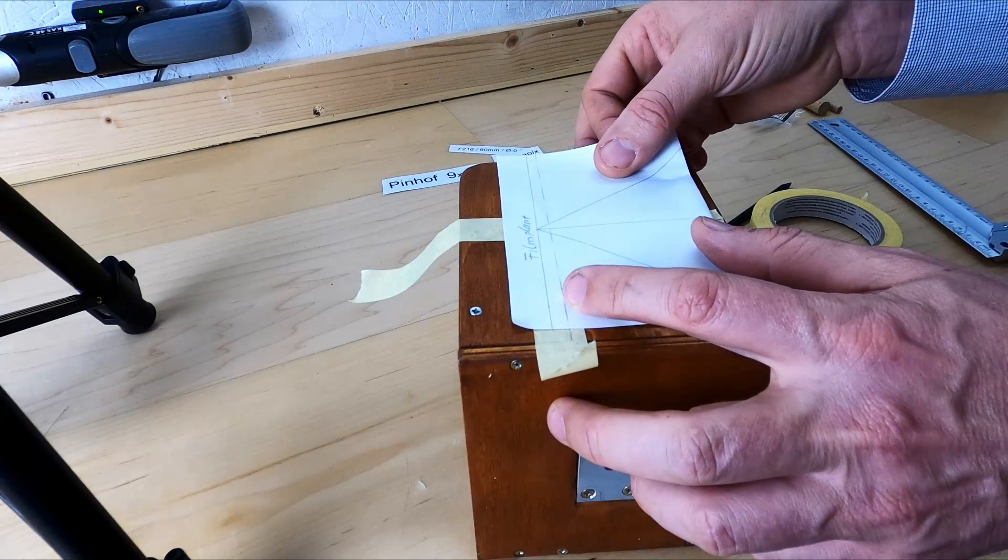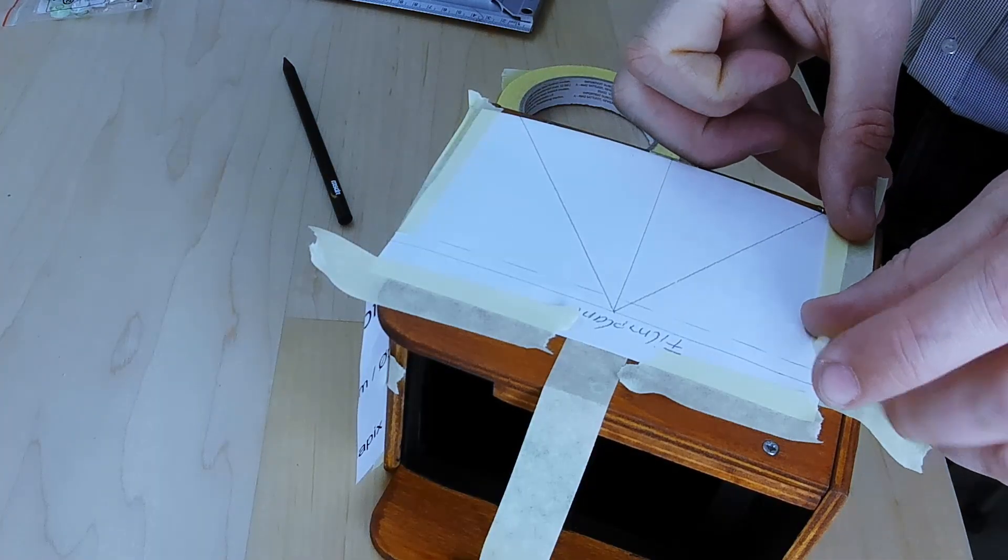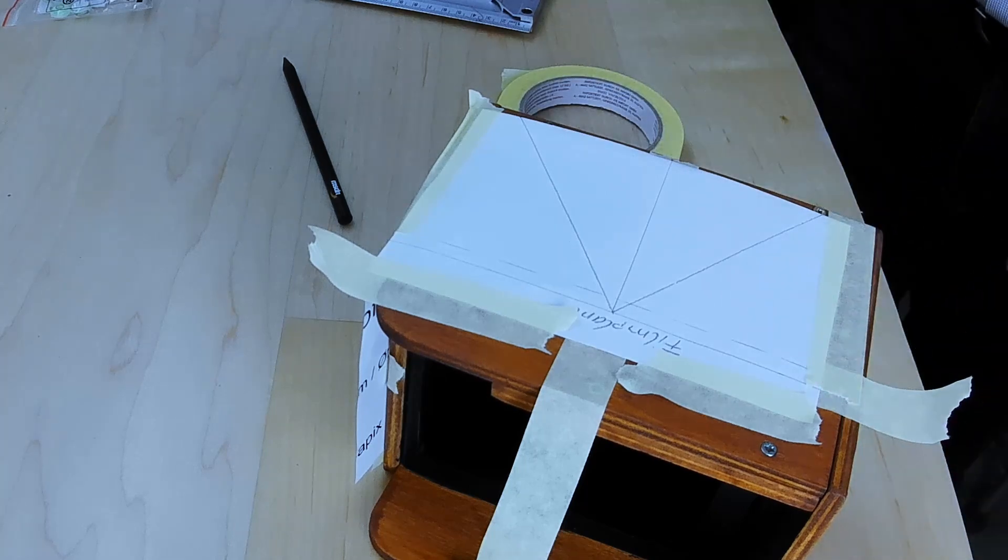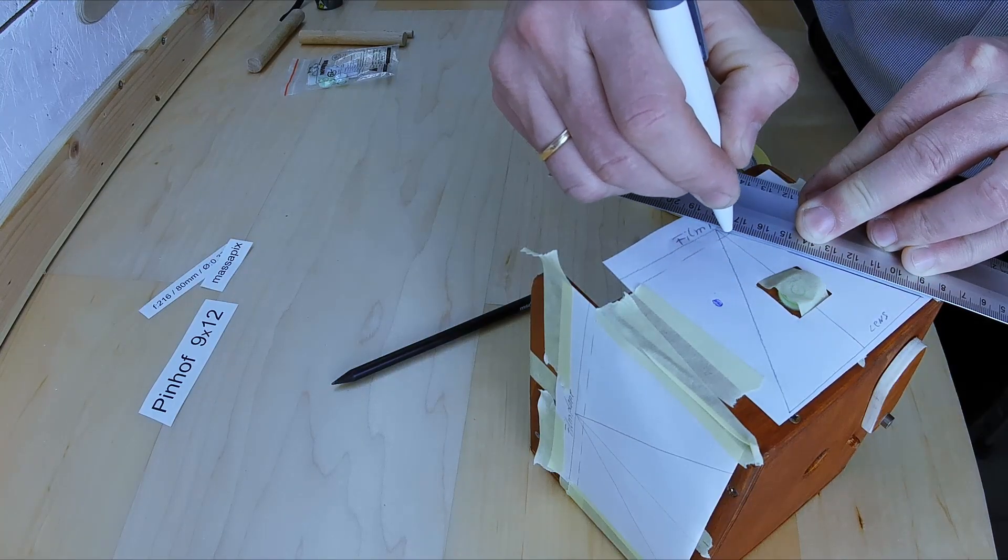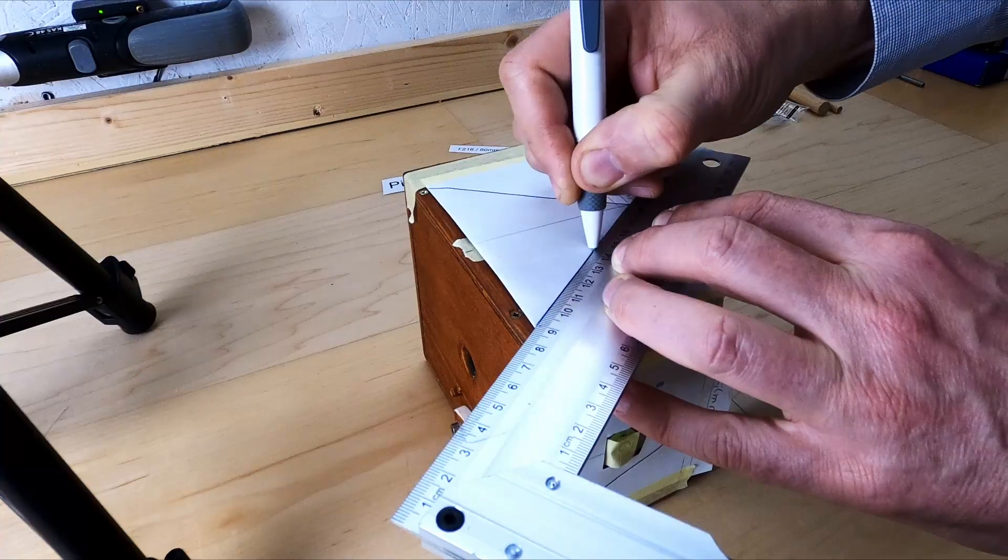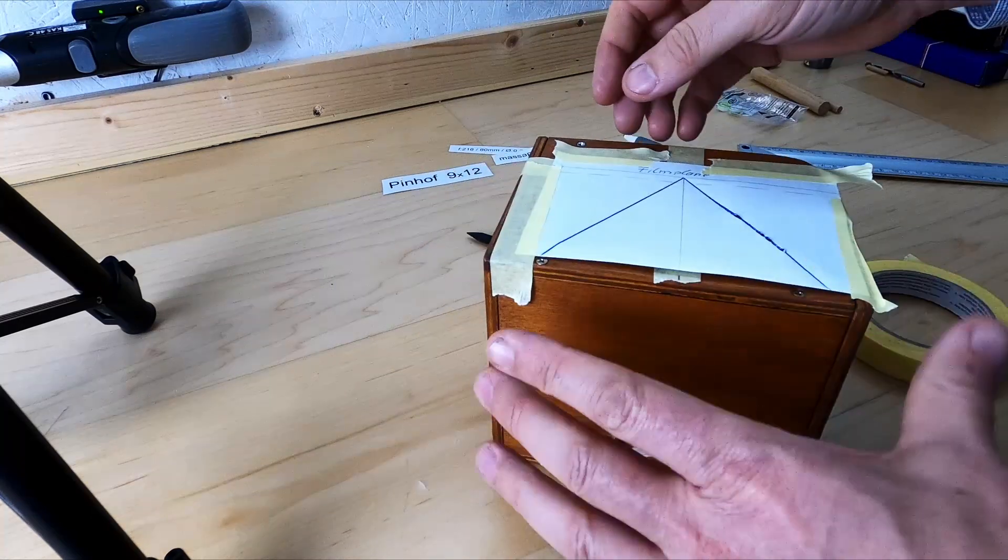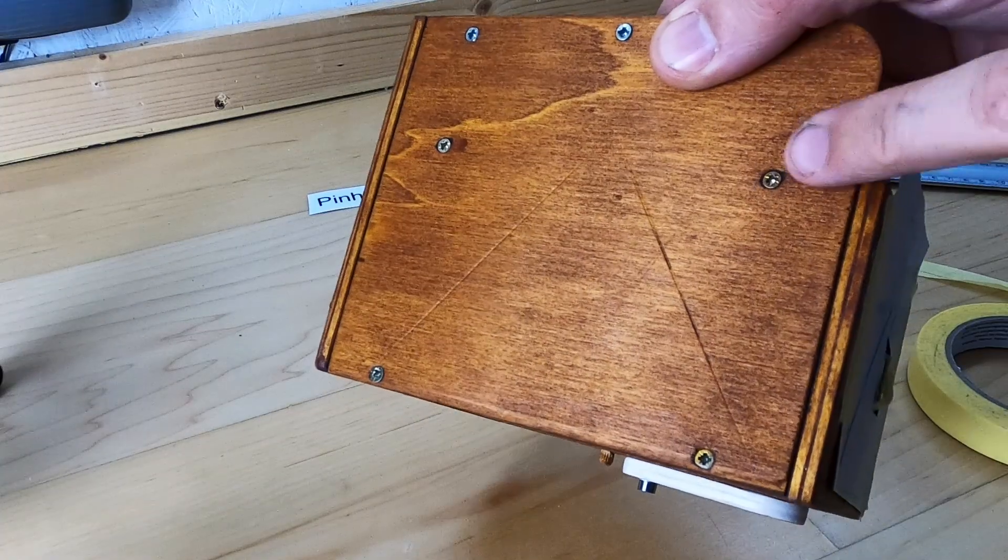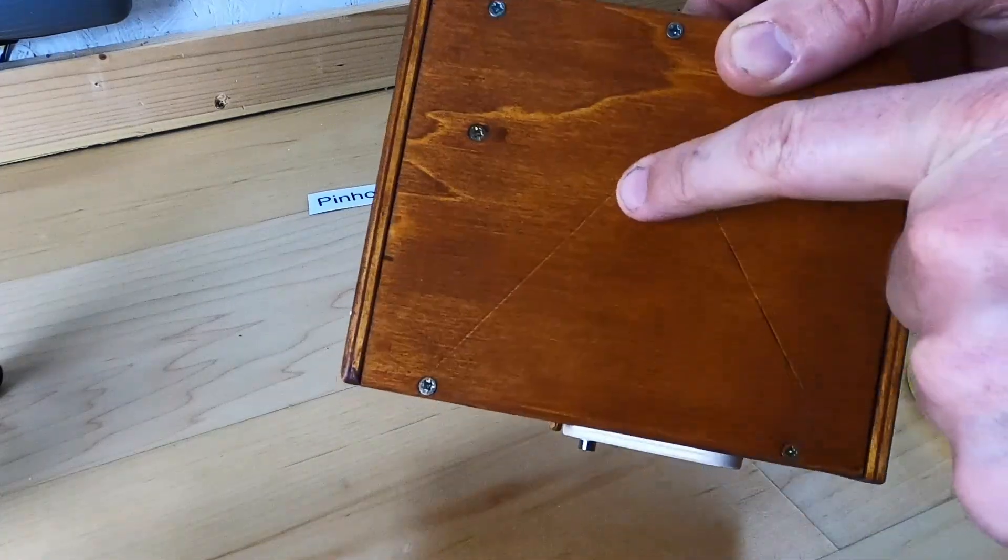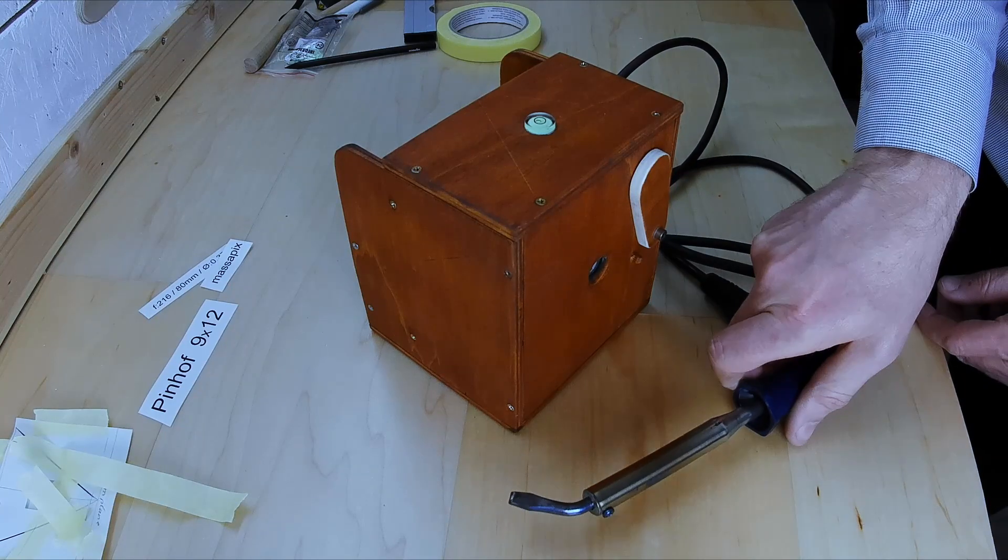After that we take a ball pen and just heavily write again on that. We can see a marking on the wood after we release the paper. This is important because we need the markings for the soldering iron later.